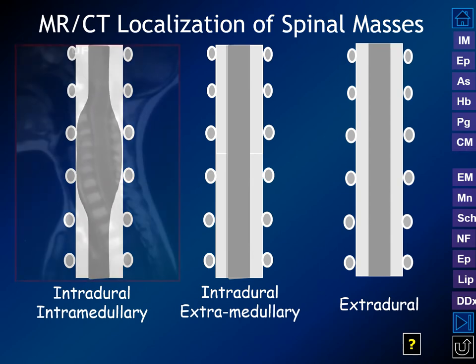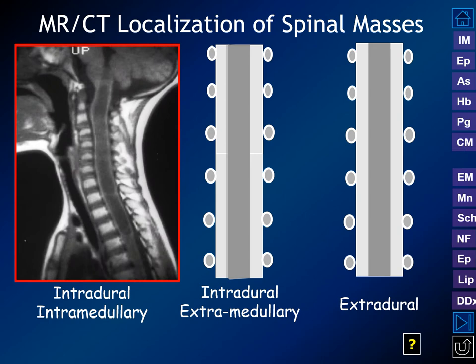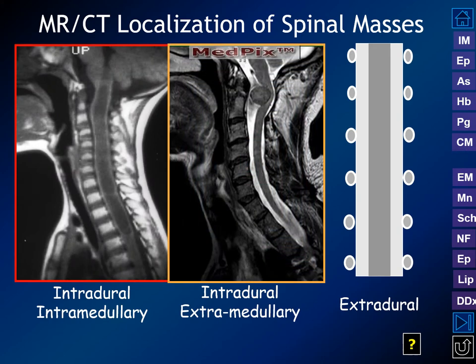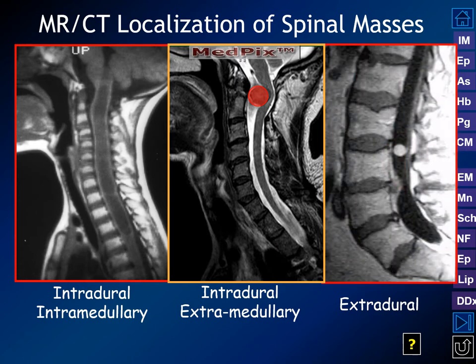We still have expansion of the cord illustrated on MR, and displacement of the subarachnoid space, which on T2 is going to be bright white. On MR we can also see a herniated disc compressing the thecal sac below the level of the spinal cord at the level of the lumbar spine.